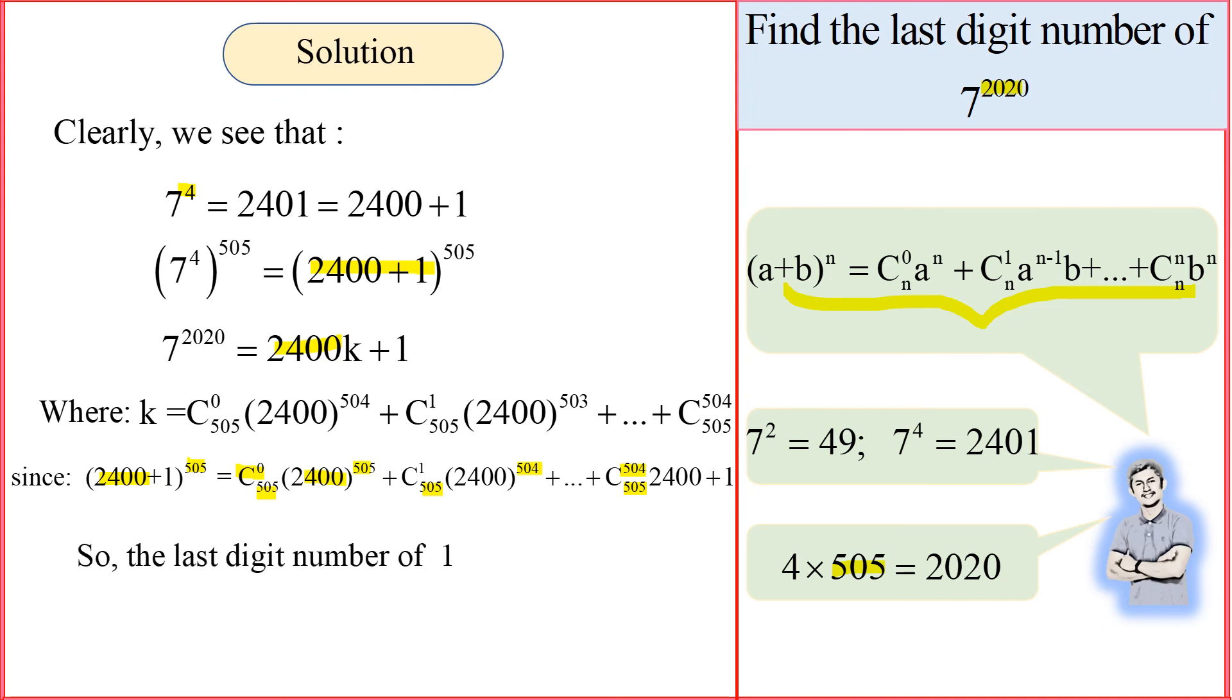So it's pretty simple there. So technically, we can see that the last digit number is 1. The last digit number is 1, and that's the answer. That's the answer to our problem.